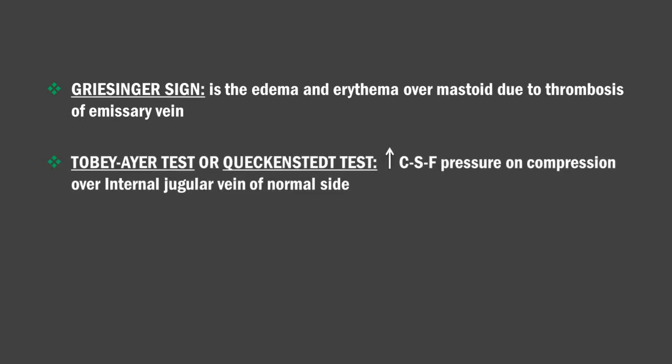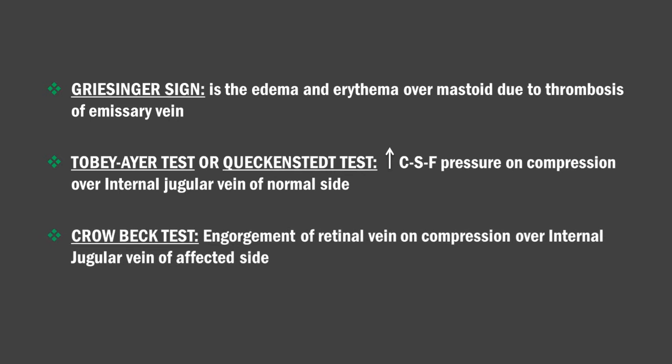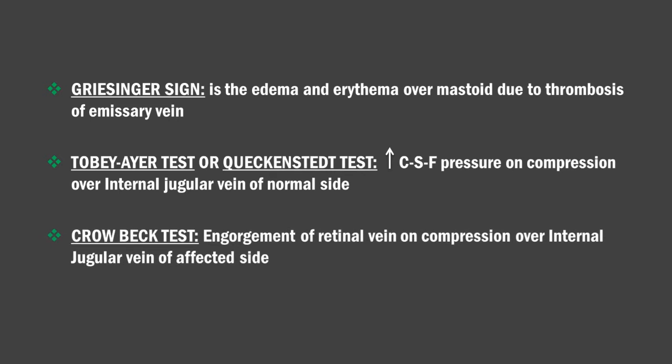The Tobey-Ayer test, also called the Queckenstedt test, shows an increase in CSF pressure on compression over the internal jugular vein of the normal side. The Crowe-Beck test shows engorgement of the retinal vein on compression over the internal jugular vein of the affected side.